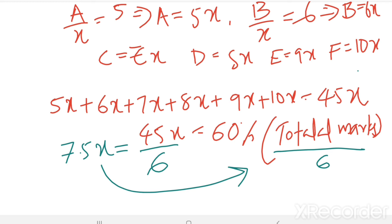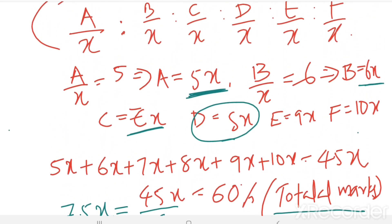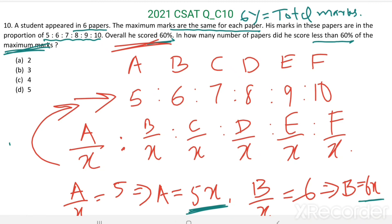Now we can find in how many papers he scored less than 7.5x, which is 60% of the maximum marks. In paper A he got 5x, in paper B he got 6x, in paper C he got 7x — all less than 7.5x. In paper D he got 8x, which is more than 7.5x. So in 3 papers he scored less than 60% of the maximum marks. The answer is option B: 3 papers.